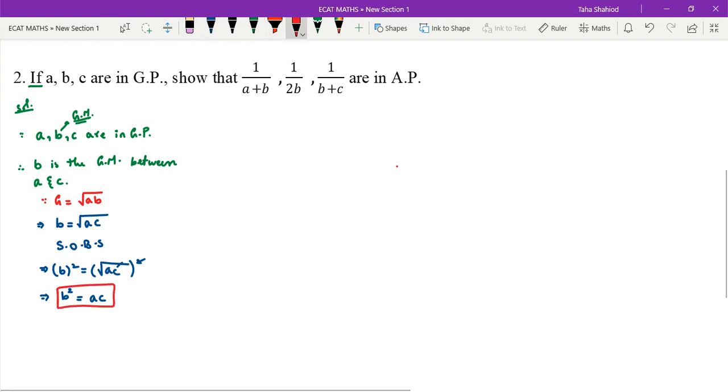We have to prove that these 3 values are in AP: 1/(A+B), 1/2B, and 1/(B+C).